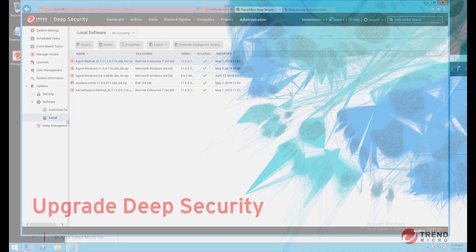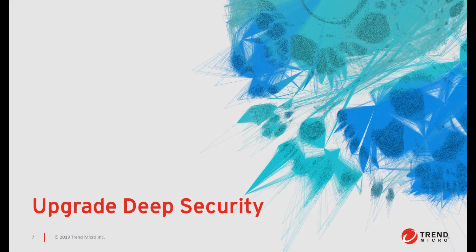In another video we'll cover the agentless deployment and upgrade process. I've now completed the upgrade of my Deep Security Manager and Relay, and I can follow the same agent upgrade process for other machines, or use software deployment tools to push the upgrade out to multiple machines in my environment. If you have any questions about the upgrade process feel free to reach out to our support team and we'd be glad to help in any way we can.